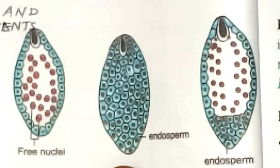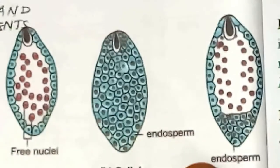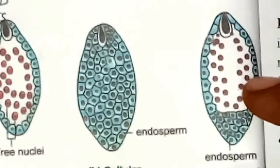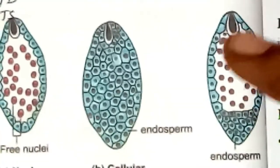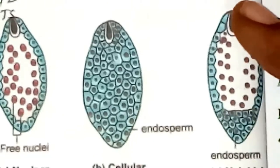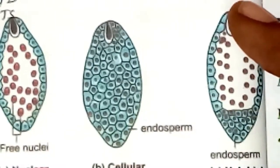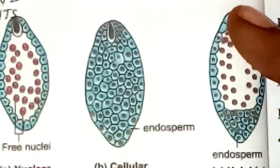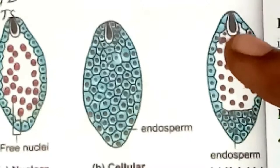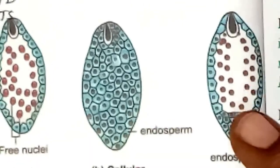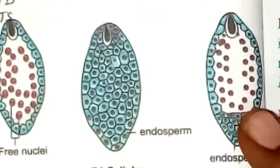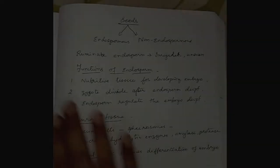In helobial endosperm, once the primary endosperm nucleus divides into two nuclei, cell wall formation takes place in one cell and they move to opposite ends — one to the chalazal end and one to the micropylar end. The nucleus at the micropylar end undergoes several free nuclear divisions, whereas the chalazal chamber may or may not divide, and if it does, division is followed by wall formation. This is seen in Hydrilla and Vallisneria.